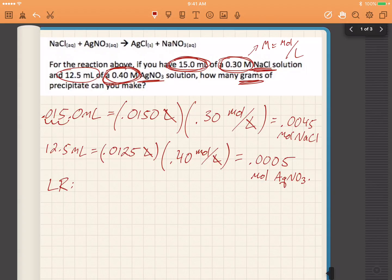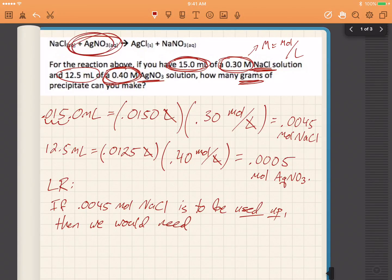So, limiting reactant. If 0.0045 moles of NaCl is to be used up, then we would need a certain amount of the silver nitrate, and we're about to calculate exactly how much.